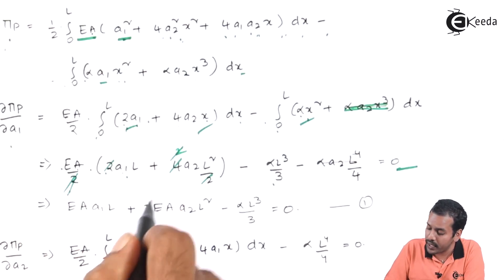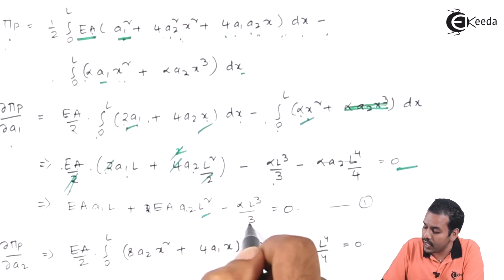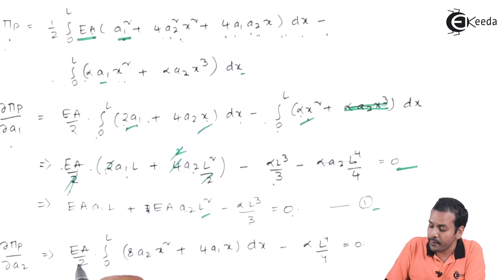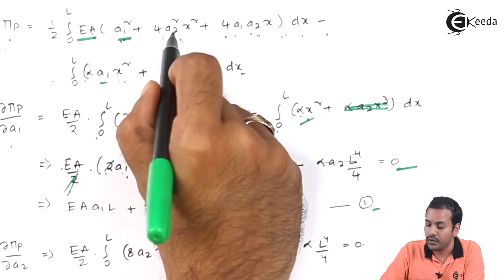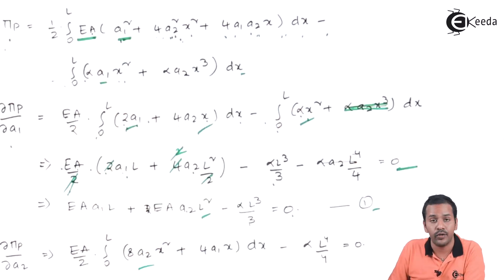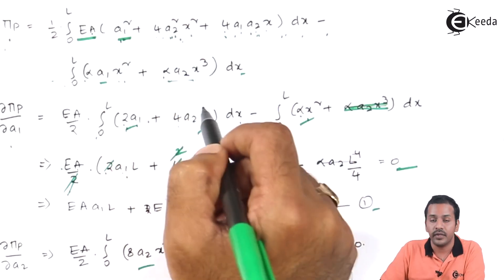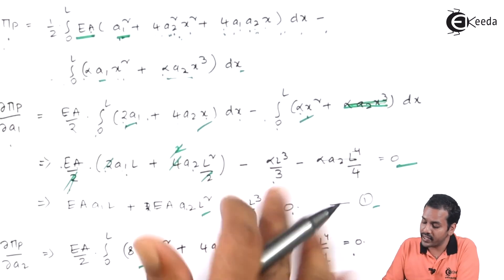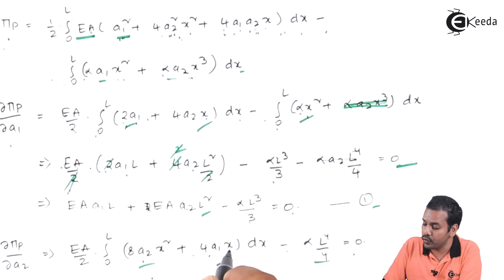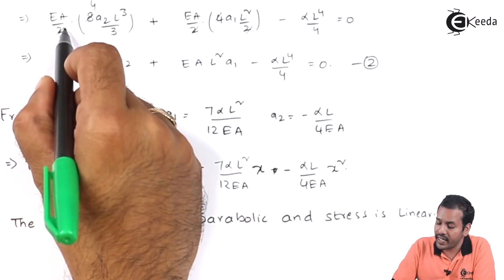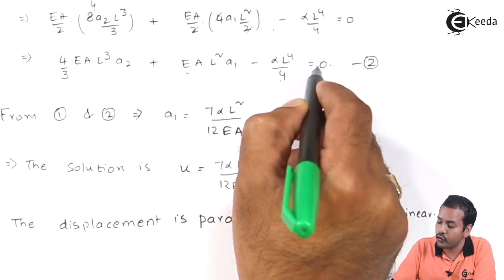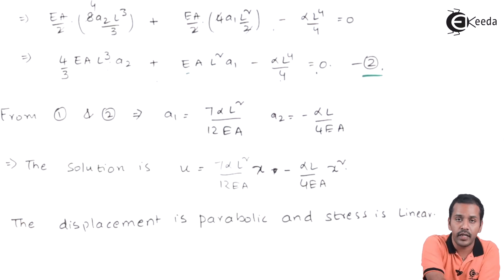Differentiating pi_p with respect to a₂ and setting to zero gives the second equation. EA/2 times integral of (8a₂ x² + 4a₁ x) dx minus alpha L⁴/4 = 0. Integrating: 8a₂ L³/3 + 4a₁ L²/2 minus alpha L⁴/4 = 0. Simplifying: 4/3 EA L³ a₂ + EA L² a₁ minus alpha L⁴/4 = 0. We now have two equations in terms of a₁ and a₂.